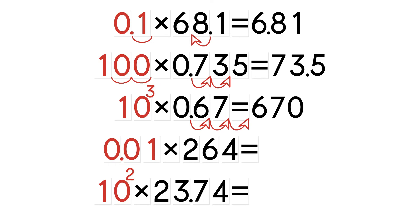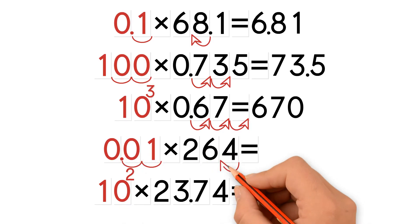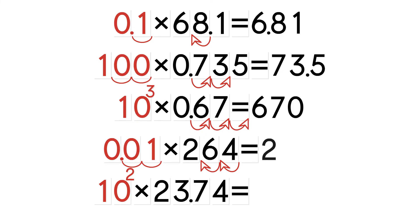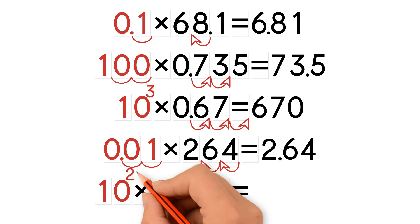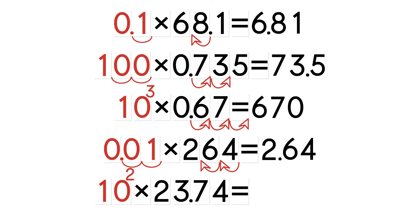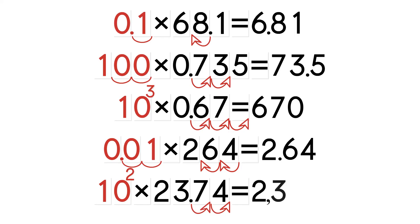Let's do the next example. The factor is one-hundredth. We move the decimal point two places to the left. We get 2.64. Let's do the last example. The factor is ten to the power of two, which is the same as one-hundred. One-hundred has two zeros, so we move the decimal point two places to the right. We get 2374.